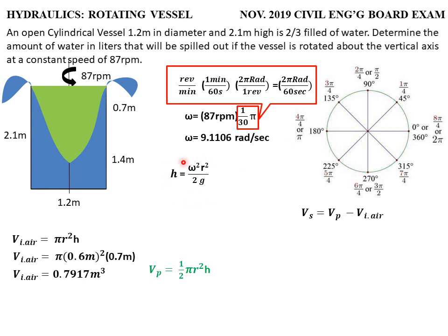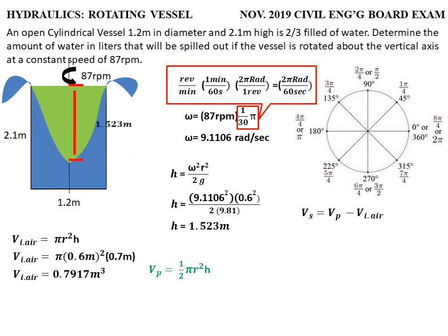Now we can compute the height h of the paraboloid. We have the angular speed of 9.1106 radians per second, radius r = 0.6 meters, and acceleration due to gravity. Substituting into the formula h = ω²r² / (2g): h = (9.1106)² × (0.6)² divided by (2 × g), giving h = 1.523 meters.